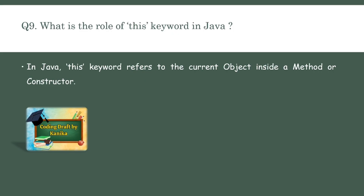The second last question is: what is the role of the 'this' keyword in Java? In Java, the 'this' keyword refers to the current object inside a method or a constructor.